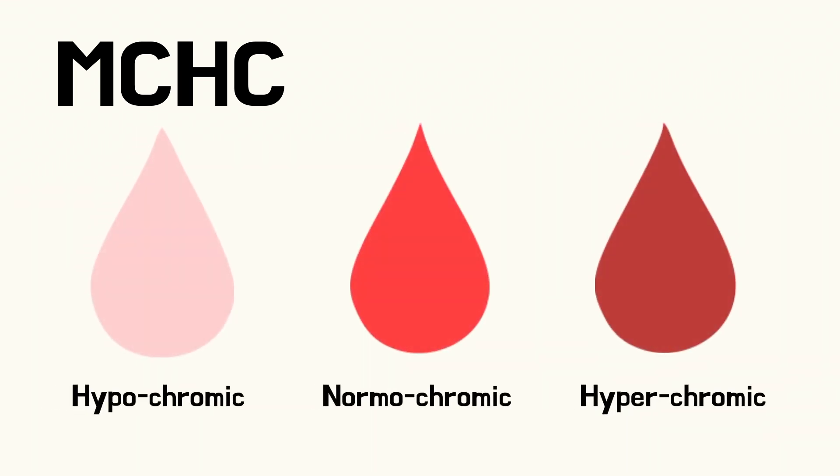If the MCHC value is abnormally low, erythrocytes are called hypochromic. If it's normal, they're called normochromic, and when it's abnormally high, they're called hyperchromic.